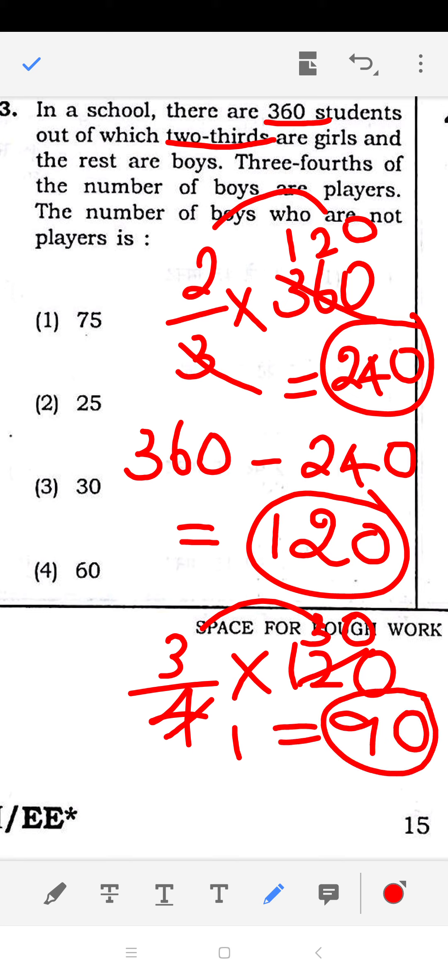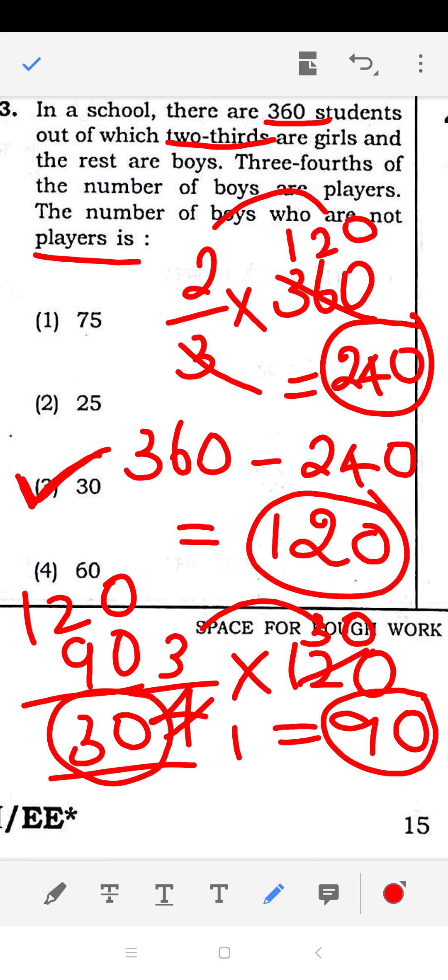What are they asking? The number of boys who are not players. So total boys are 120. Subtracting the number of players, I get 30. So 30 students, 30 boys, are not players. Option 3 is the right answer. Thank you.